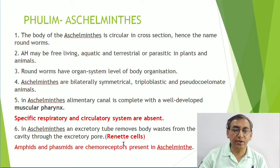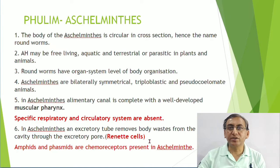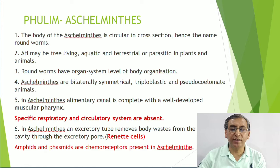Aschelminthes have specific chemoreceptors. Those present on the anterior end are known as amphids, and those present at the posterior end are known as phasmids. These are the chemoreceptors present in Aschelminthes.